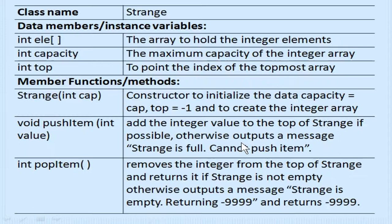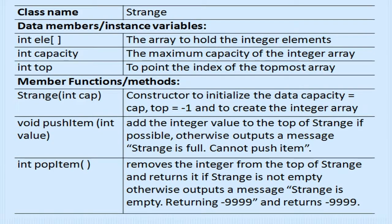Define the class 'strange' with the following details. The class name is 'strange' and it has three data members: first, the array variable ELE which can hold integer elements; second, the capacity variable for the maximum capacity of the integer array — fixed at execution time through dynamic allocation; and third, the variable 'top' to point to the index of the topmost array element, which identifies whether the stack is empty, full, or the current position.